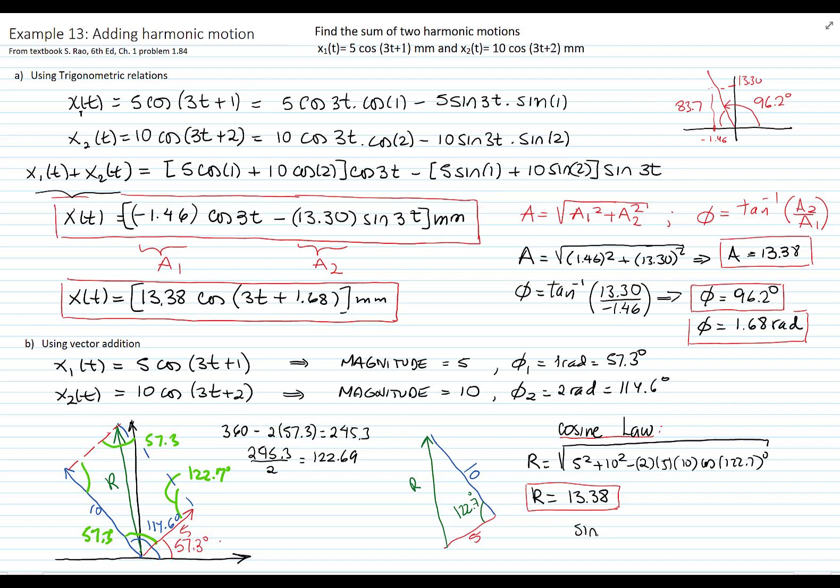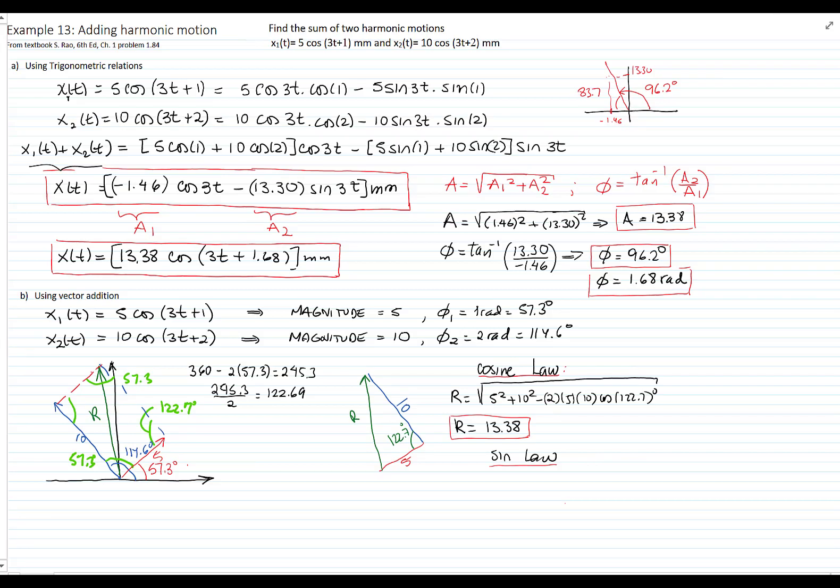And I will use the sine law to find the angle of that resultant. I will call it beta. Beta is this angle right here that I'm going to find. This is sine of beta over the opposite magnitude and then sine of 122.7 over the resultant. So beta gives me an angle of 38.97, but I need the angle from the horizontal, so I have to add 57.3, which is this angle right here.